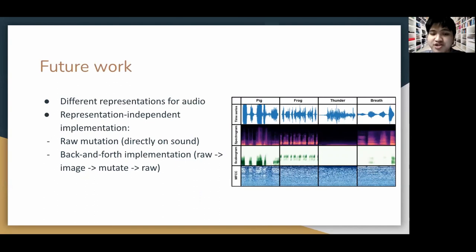Our implementation assumes that we know the model uses spectrogram to represent sound. It's not completely black box. So we would like to make it representation independent by one of the two ways: using raw mutation directly on sound or back and forth implementation. From raw, we produce image, we mutate the image, and we convert back to raw to fit to the model. So that's it. Thank you for the attention.